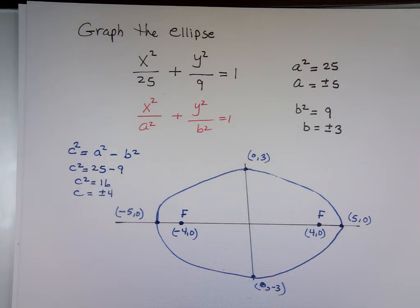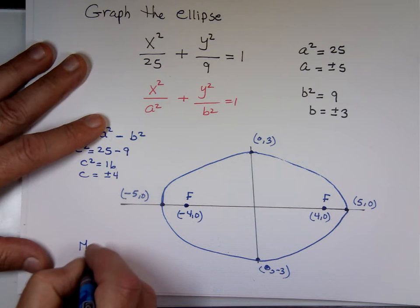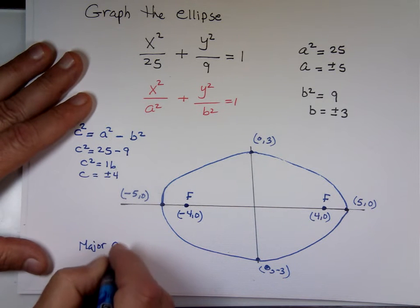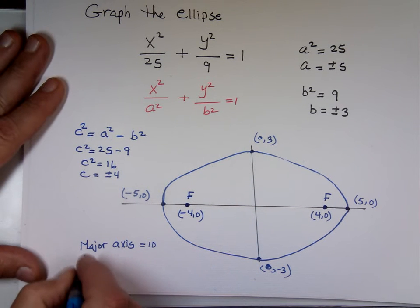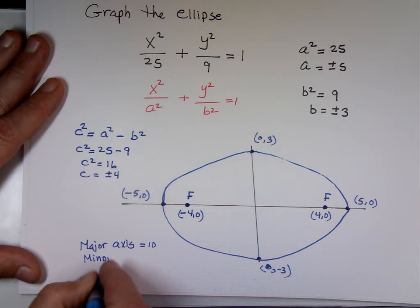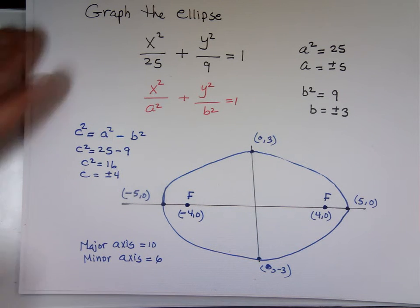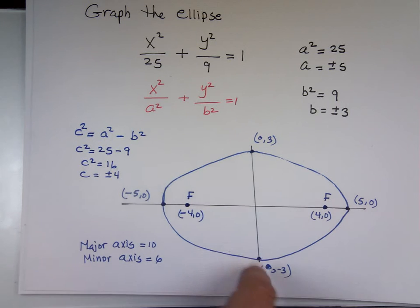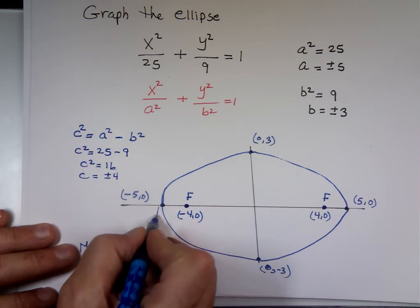So the major axis here is 10 — that's twice A. The minor axis is twice B, which goes from that end to this end. One vertex here, another vertex there.